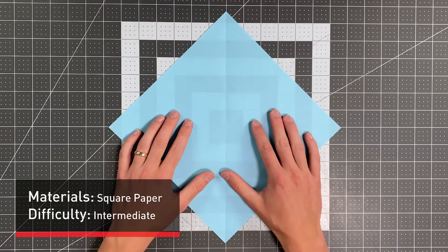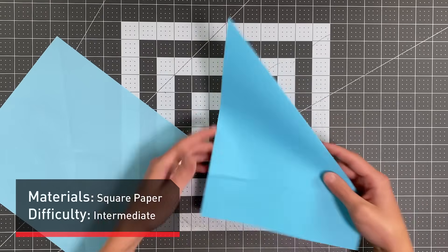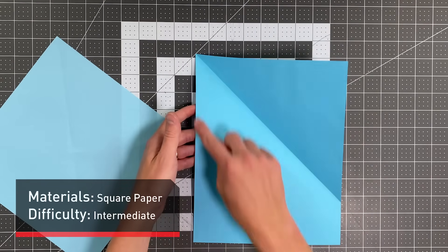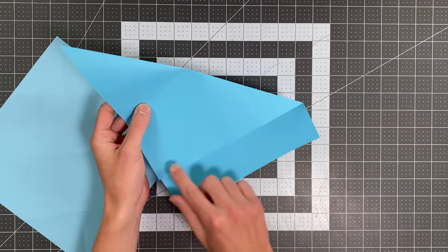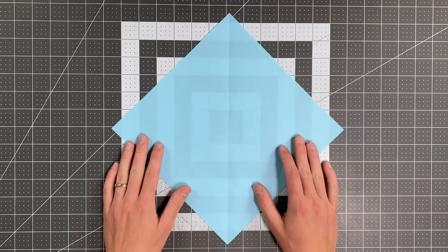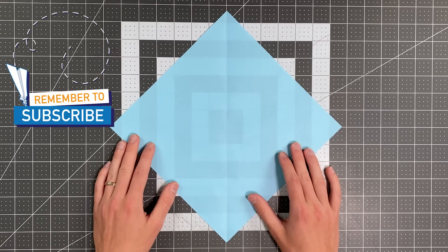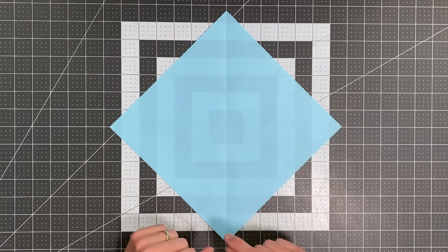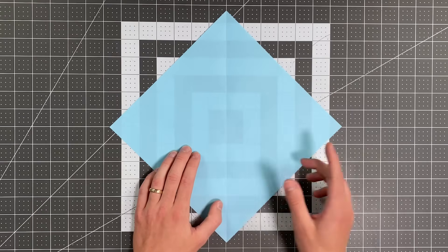All you'll need in order to fold this paper airplane is a square sheet of paper. If you happen to only have rectangular paper on hand, you can really easily convert it by taking the top edge to a side edge, and then just cutting off that excess paper. So a wide range of thicknesses works well with this plane. I'm using copy paper here, which is quite thin, but you could use something up to 24 pounds or 90 GSM if you want this to fly really far. And with that, we're going to begin with the paper in this orientation with the colored side up.